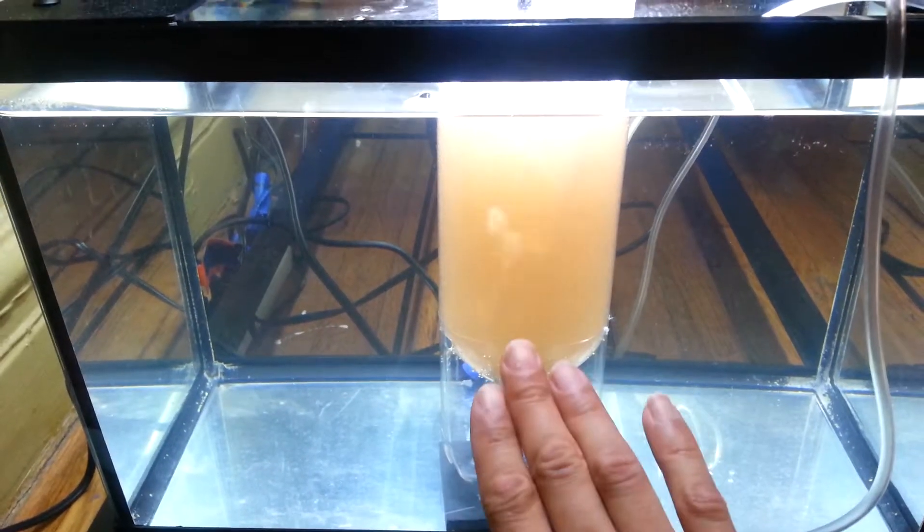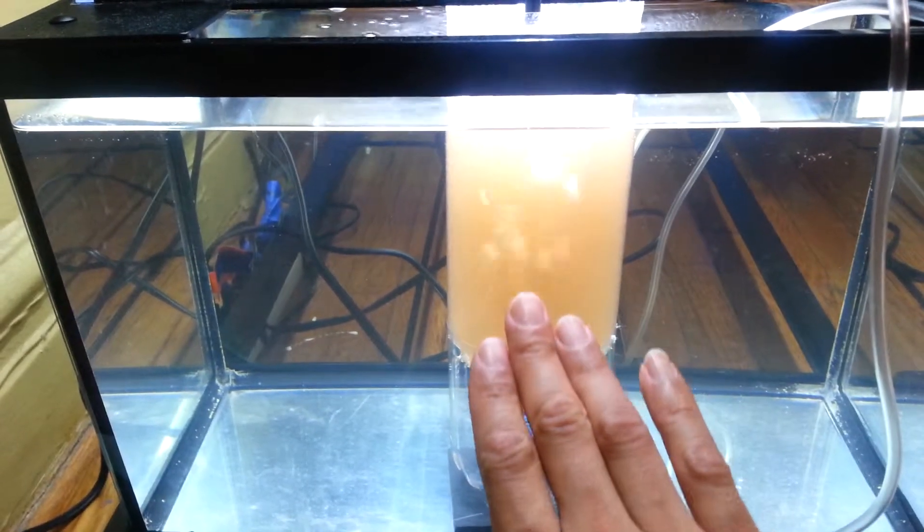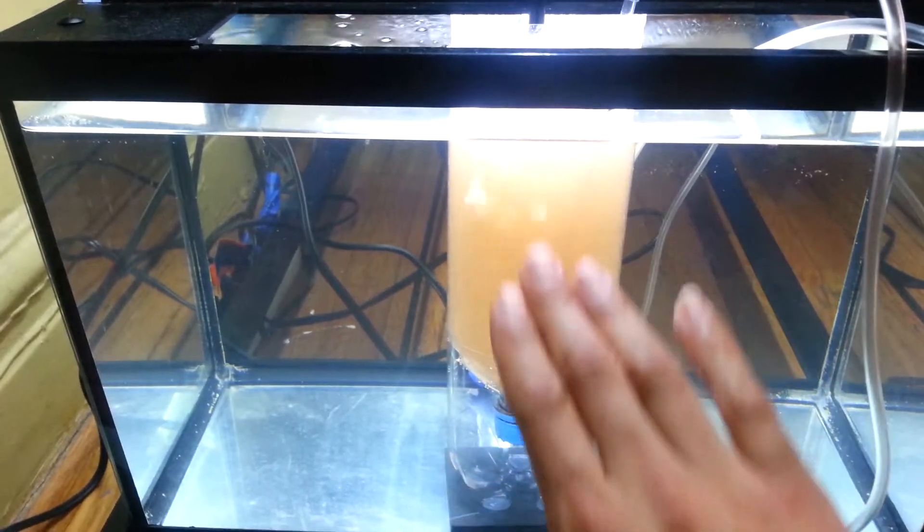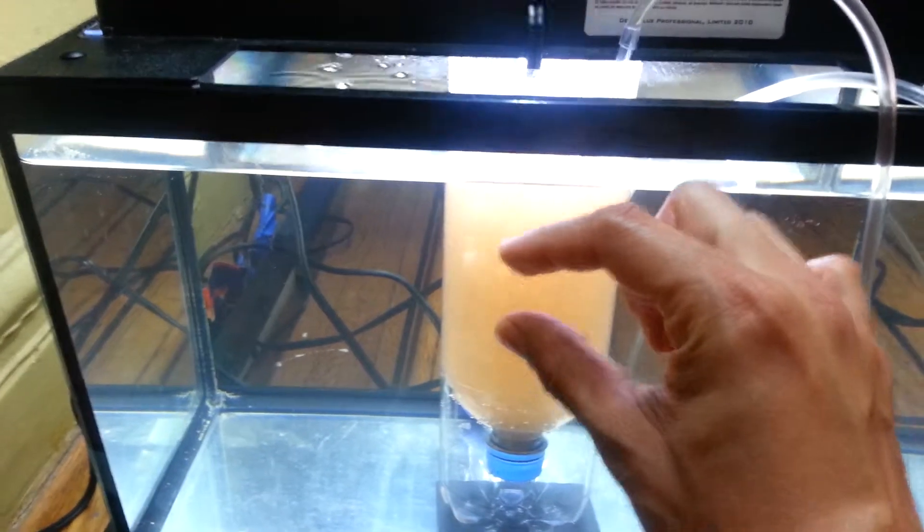What that light is going to do is attract all the brine shrimp. They're going to start to migrate towards the light because they're attracted to light. Once the brine shrimp make their way down, you're going to get a clear water column and all the eggshells are going to float towards the top.